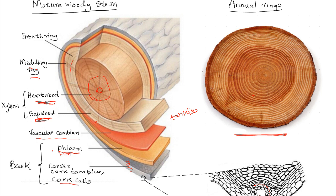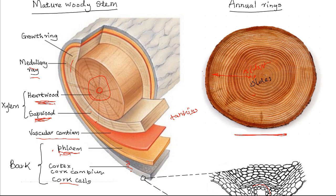The rings are therefore called annual rings, and the age of a plant can be determined by counting them. The oldest rings are at the center and the youngest are toward the periphery. The oldest xylem at the center makes up the heavily lignified heartwood, while the younger, still-conducting xylem at the periphery makes up the sapwood.